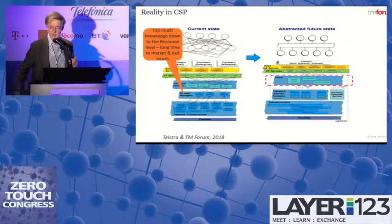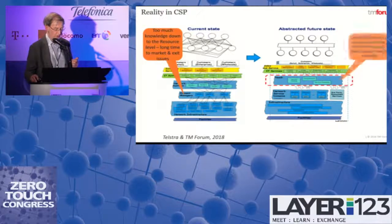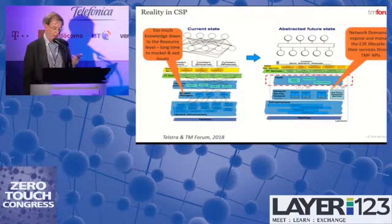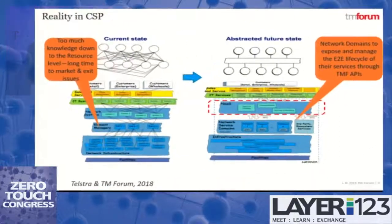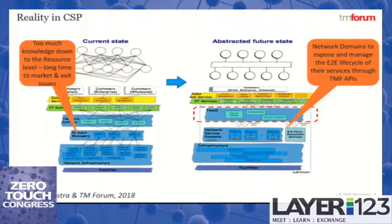There needs to be an agreement struck between networking departments and IT departments on what those network-as-a-service offerings actually would be. That's where we're developing ideas about network domains that both manage the exposed operational service — connectivity or application — but also allow management of the lifecycle of those items.